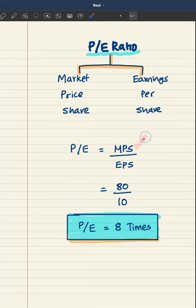Market price in the numerator, earnings per share in the denominator. Let's take an example.